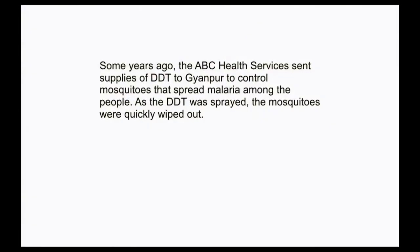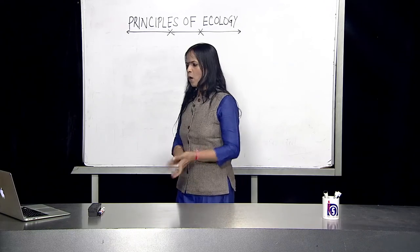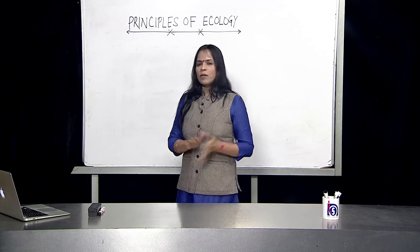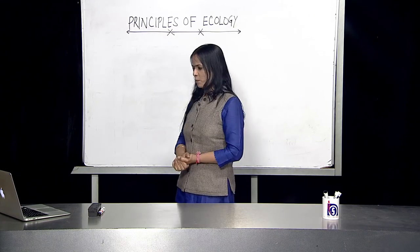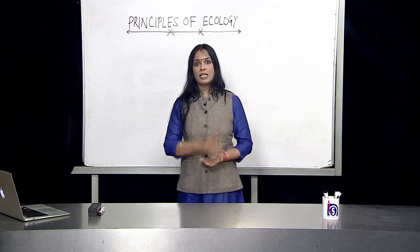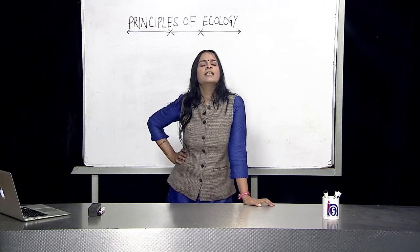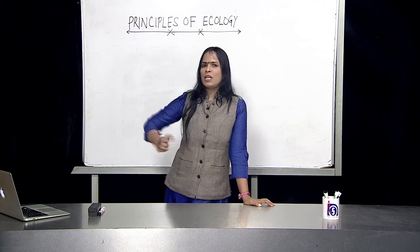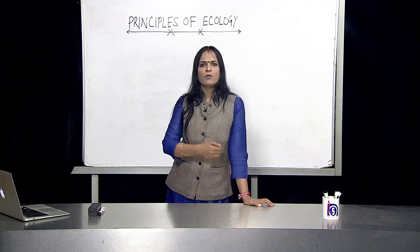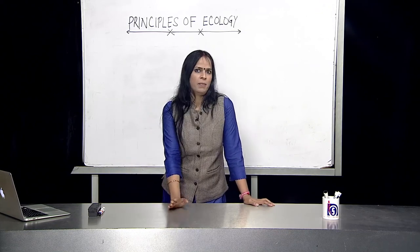A few years ago — maybe 10, 20, maybe 30 years, we can go back to that time. There was a city which I have called Gyanpur. They had a municipal corporation with a health service department. They realized that there were too many mosquitoes and therefore malaria was spreading in their city. The wise people and corporation of Gyanpur decided to kill the mosquitoes. So they sprayed DDT. We know that when you spray DDT on grasses, open areas, and water bodies, it kills mosquitoes. And that's exactly what happened — the mosquitoes got killed.